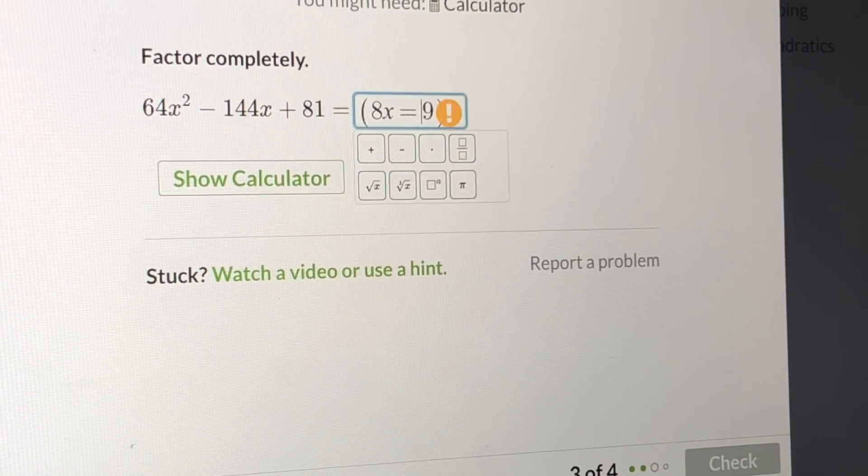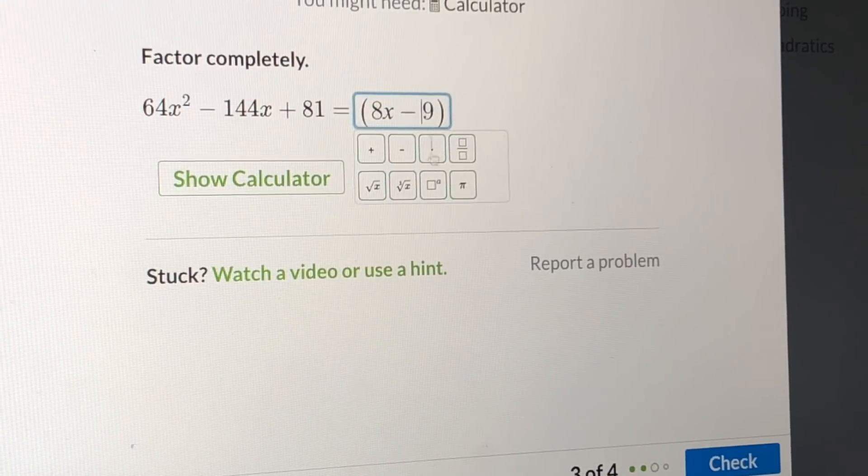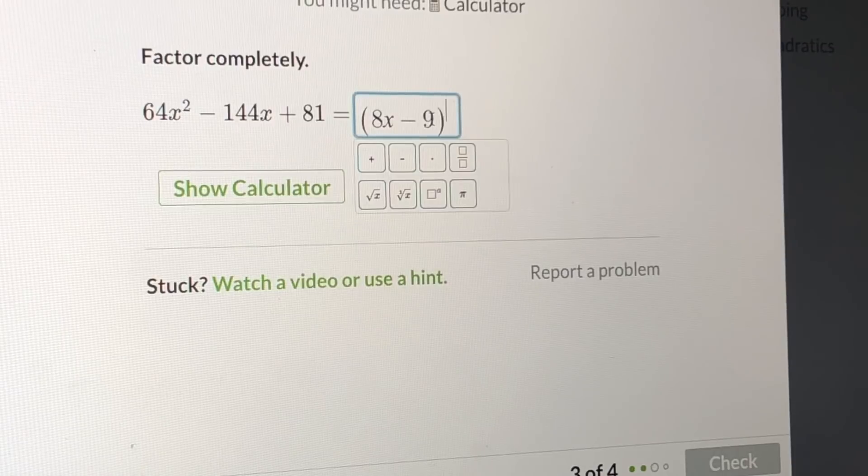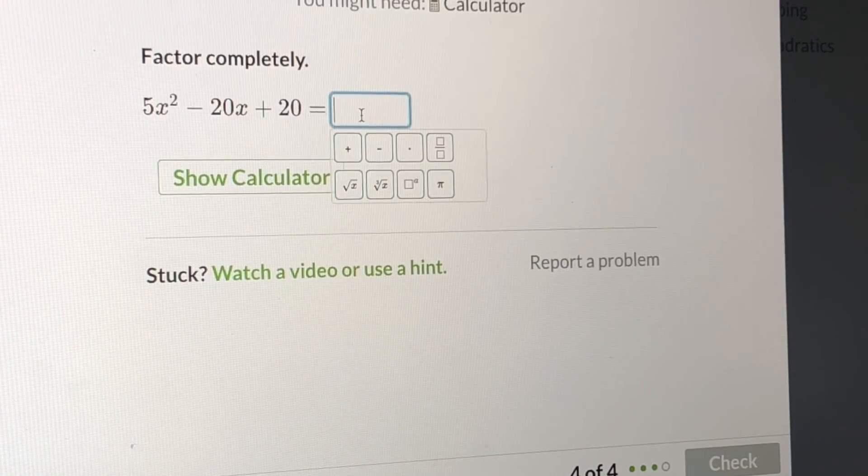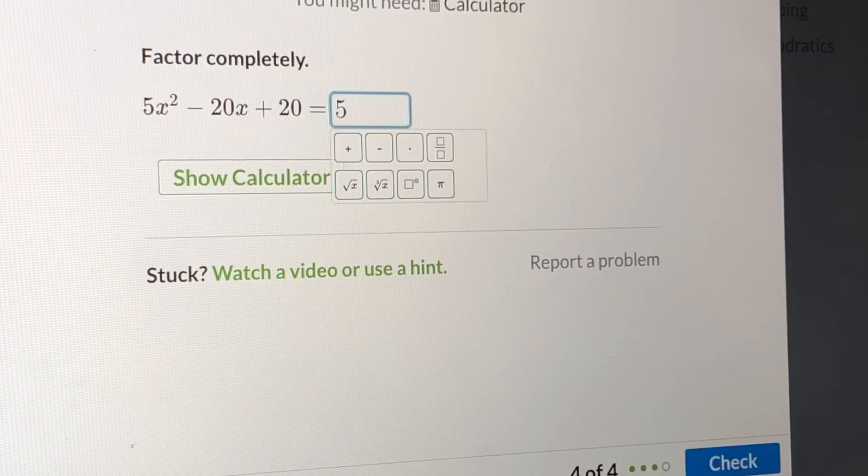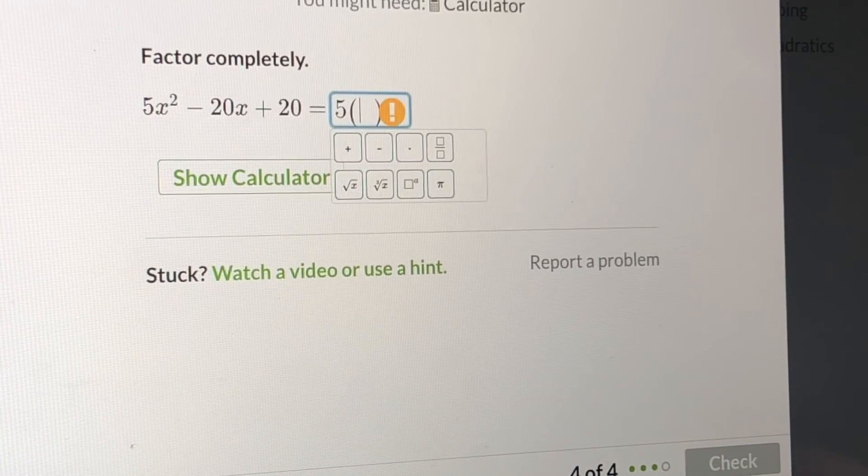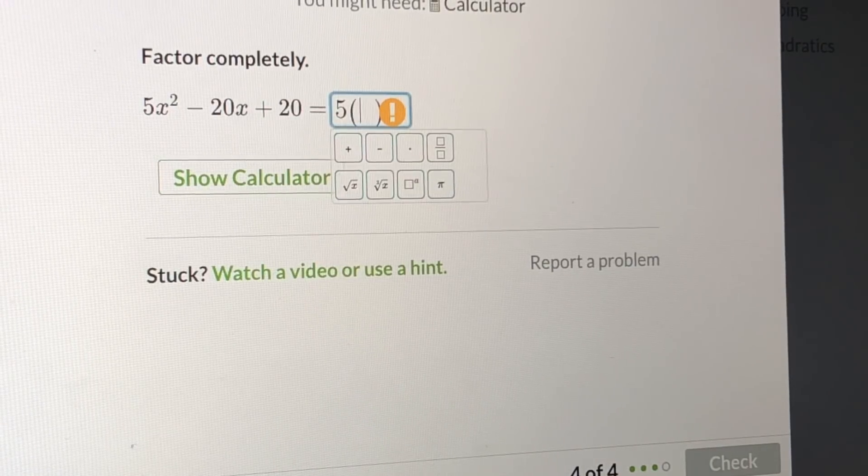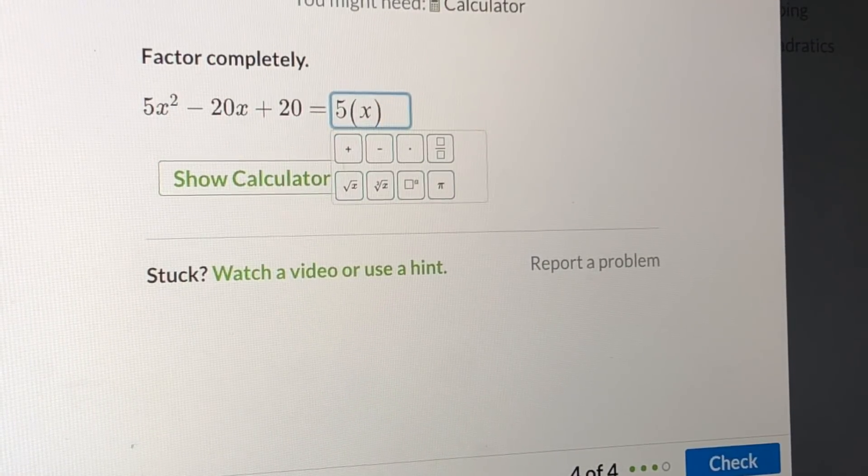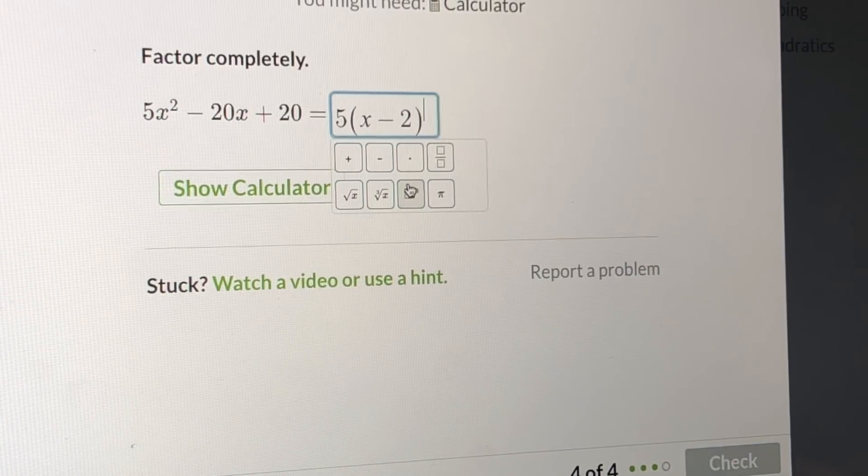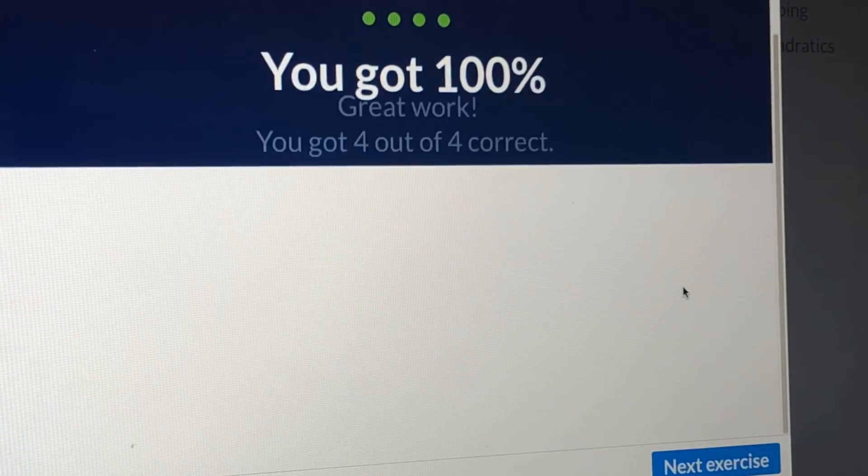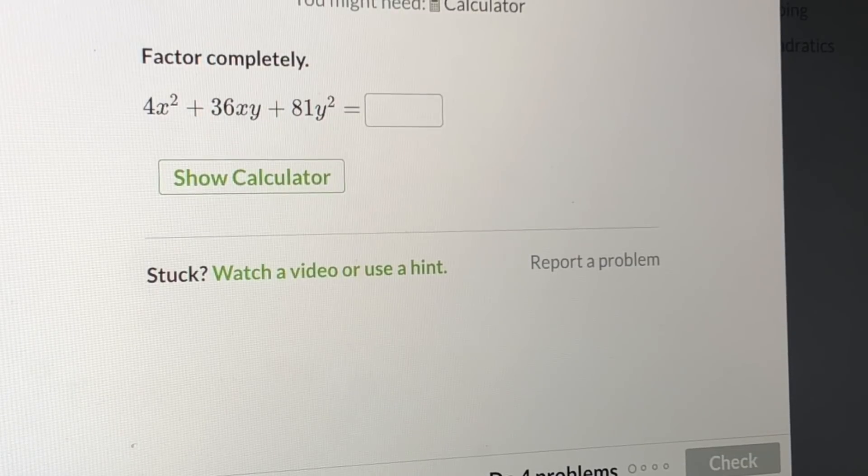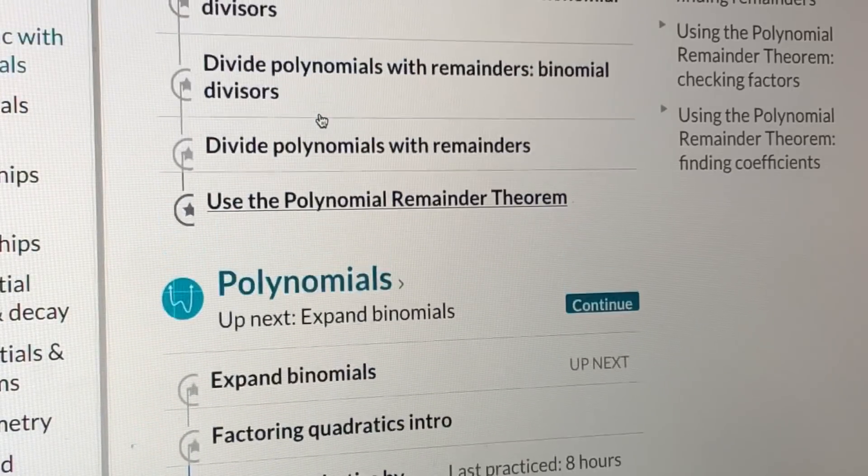And this one should be 8X, 8X minus 9 square. Are we right? We are right. This one we can take out 5 at first, and then it will be X minus 2, X minus 2 square. It's a little bit too simple, right? We should move on to do another exercise. Perfect square. It's a perfect, perfect square. We do it perfect. Okay, I will move on to do something different.